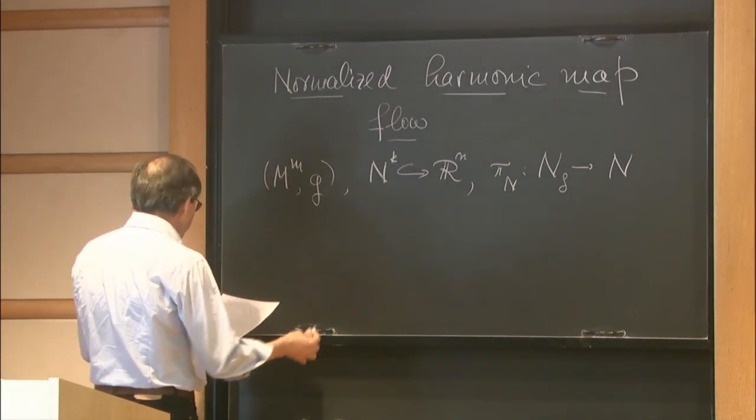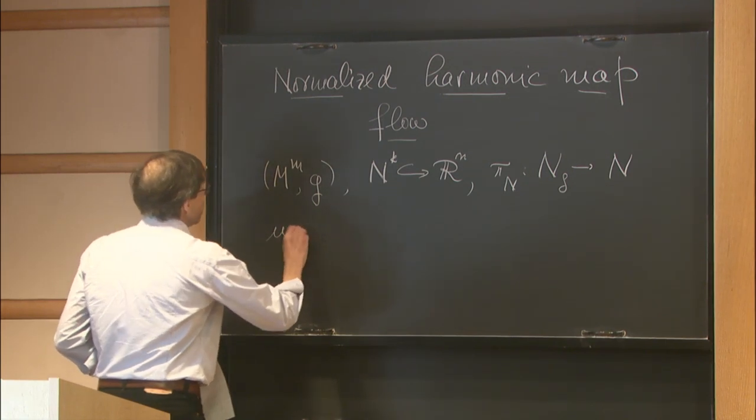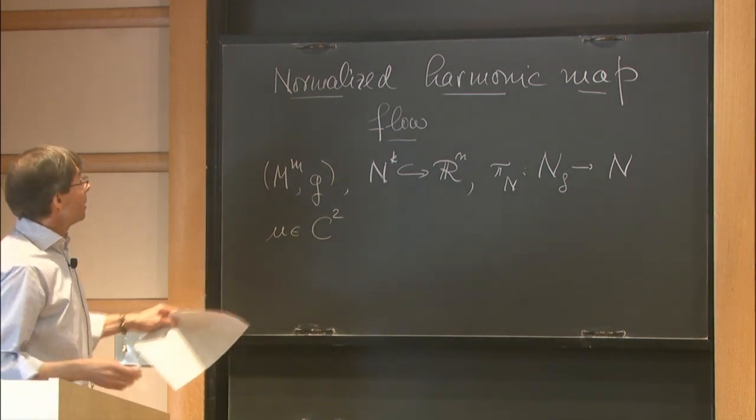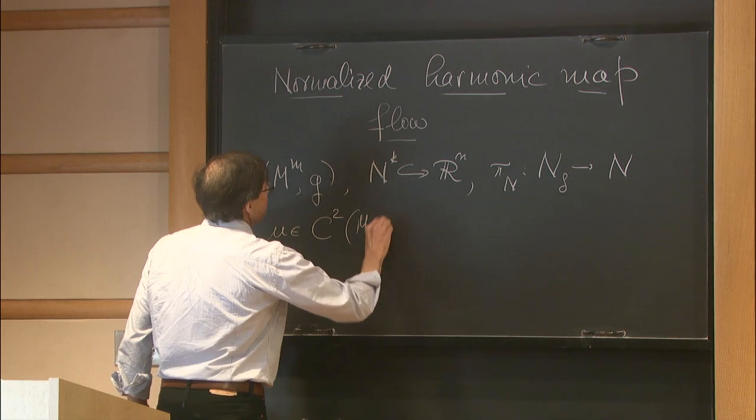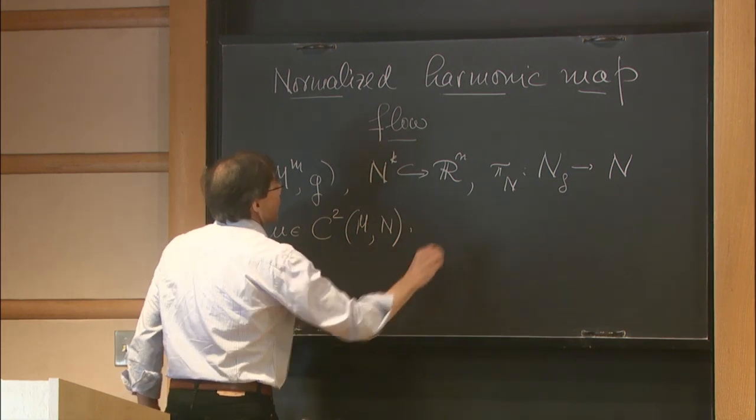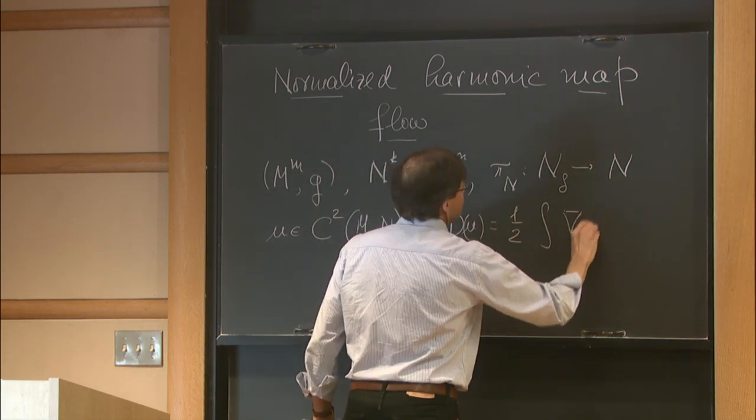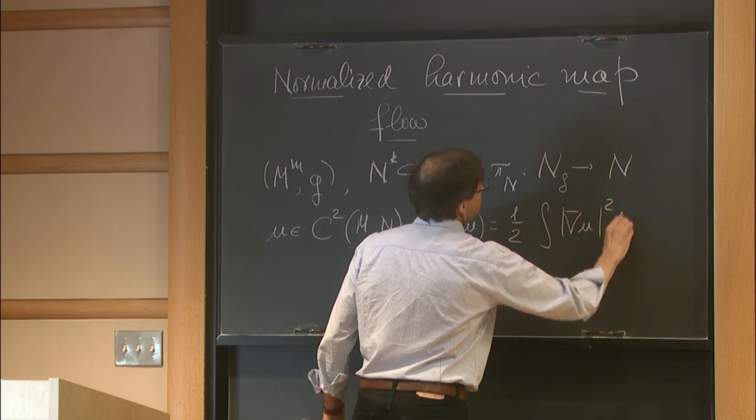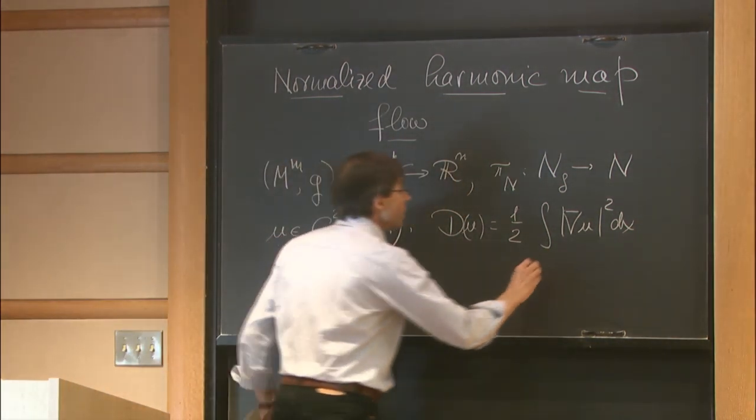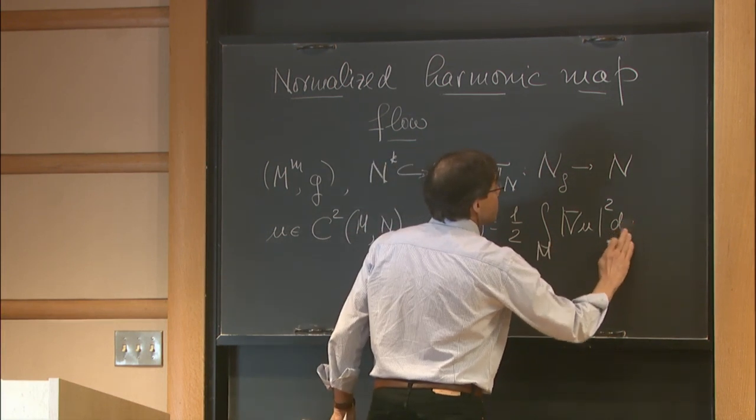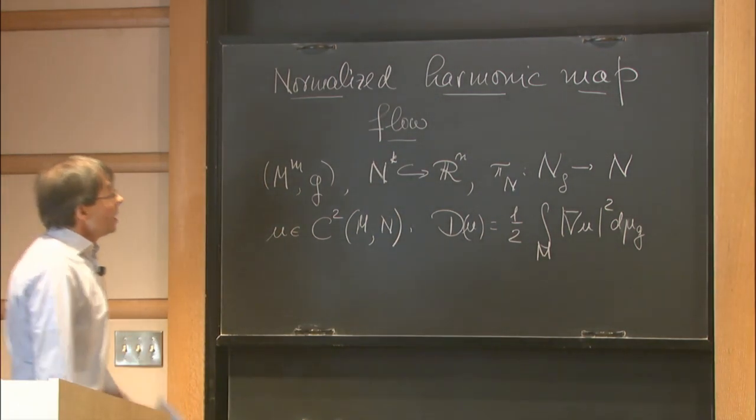And then for smooth map, say, I can define first of all the Dirichlet integral. So all maps will be C^1 at least. Let's say U is of class C^2 from M into N. And the Dirichlet energy is just one-half times the square of all components of the gradient integrated over our manifold M. And this should be the volume element induced by the Riemannian metric G.